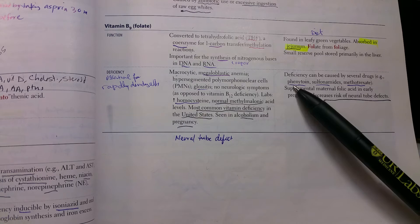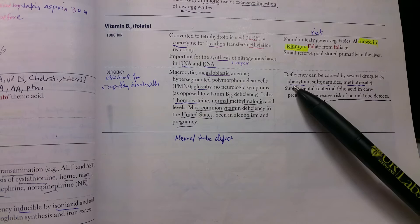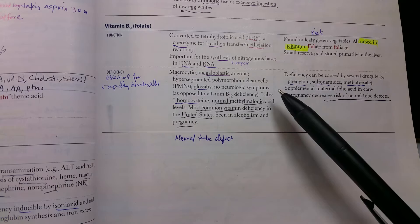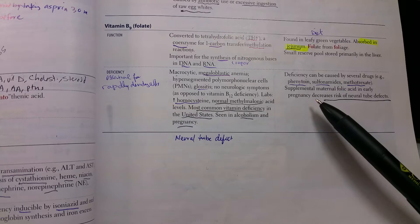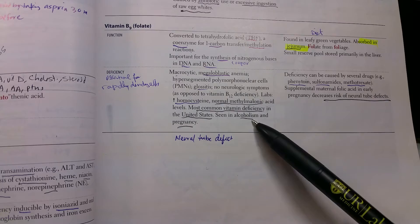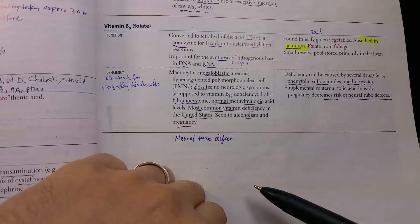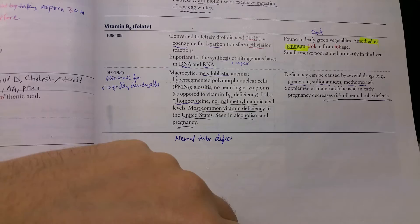The deficiency can happen due to several drugs that affect it: phenytoin, sulfonamides, and methotrexate. It's very important to supplement vitamin B9 or folate to pregnant mothers, as the fetus needs increased amounts to decrease the risk of neural tube defects. Alcoholism and pregnancy are the most common groups affected by vitamin B9 deficiency.